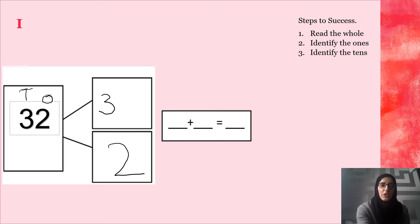3 tens which are 30. Now, what I'm going to do is put my number together. I'm going to put my tens which is 30 add 2. 30 add 2 gives me the whole which is brilliant. 30, 2.